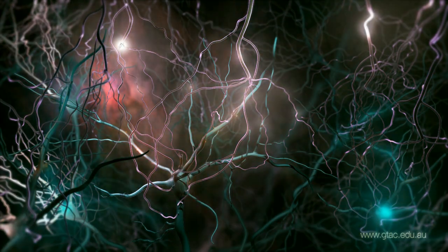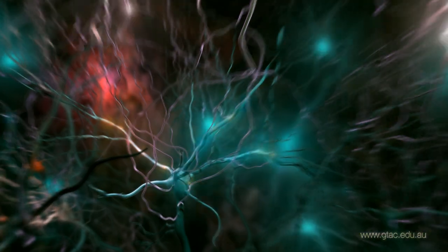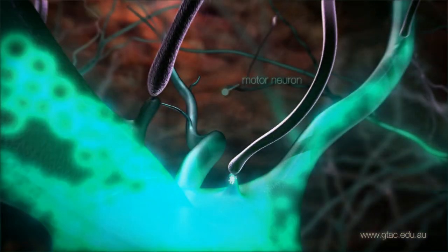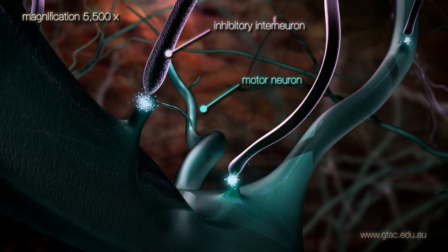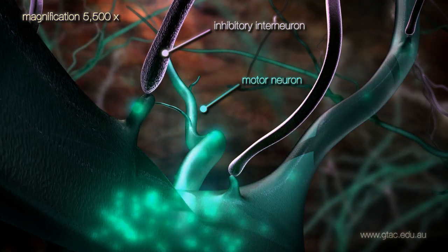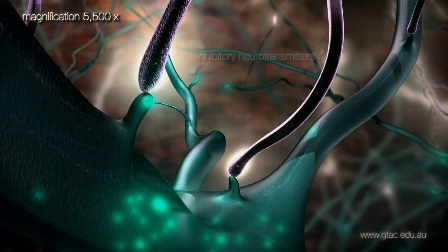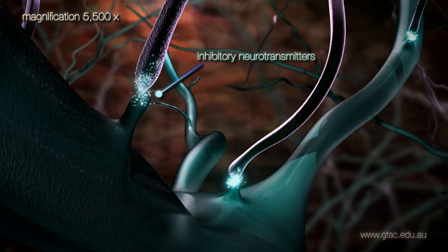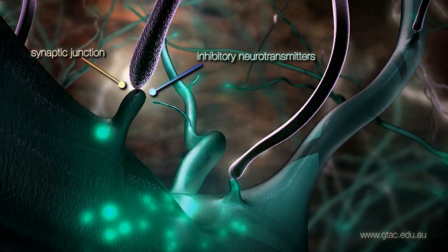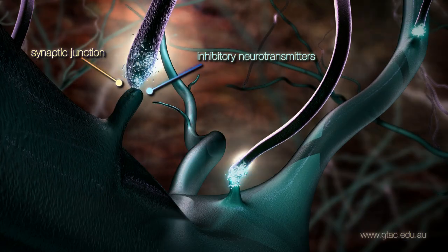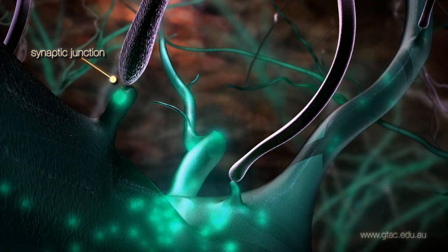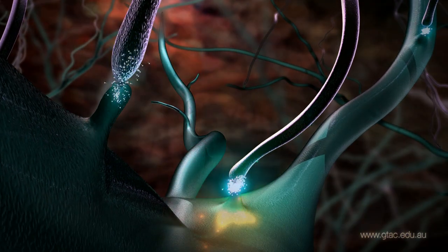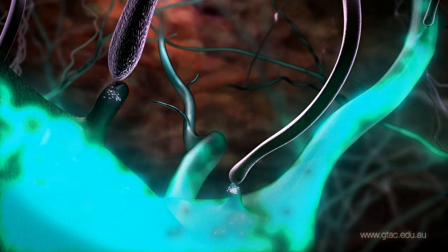To see how the toxin exerts its effect, we will zoom in on a synapse between a motor neuron and an inhibitory interneuron. The interneurons release inhibitory neurotransmitters into the synaptic junction. This prevents the firing of motor neurons so that the muscle fibres they control do not constantly contract.